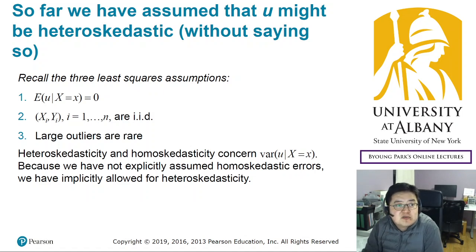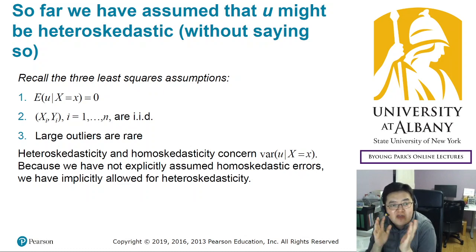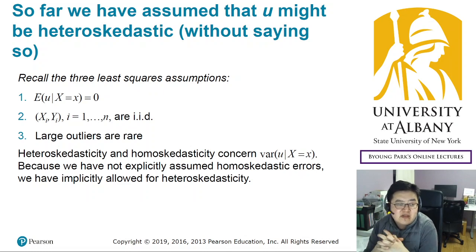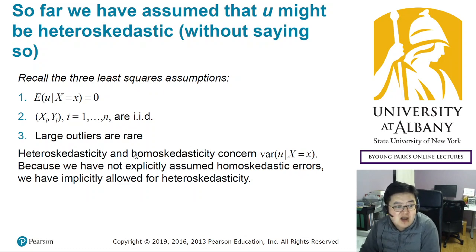Hi. So in the previous video, I introduced what homoscedasticity and heteroscedasticity mean. They look difficult, but the idea is very simple. Remember, we had three assumptions to justify the regression model: one is the conditional mean zero assumption, the second is the IID assumption, and third, the rare outliers assumption. And when I was a college student, I learned homoscedasticity as the fourth assumption.